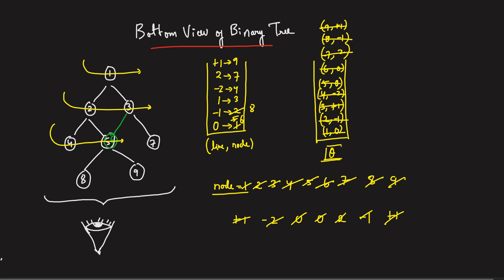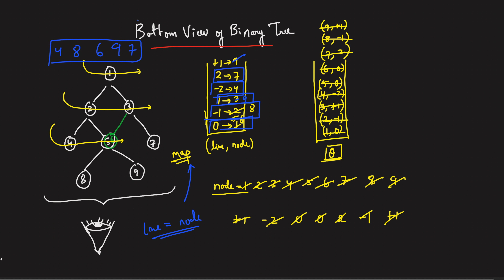The queue is now empty. Since we used a map data structure, the keys are stored in sorted order. Key minus 2 gives 4, key minus 1 gives 8, key 0 gives 6, key 1 gives 9 — because 3 was replaced by 9 — and key 2 gives 7. So iterating through the map, we get the bottom view: 4, 8, 6, 9, 7. Whatever line you're processing, just replace the node in your map data structure — that's all you need to get the bottom view.